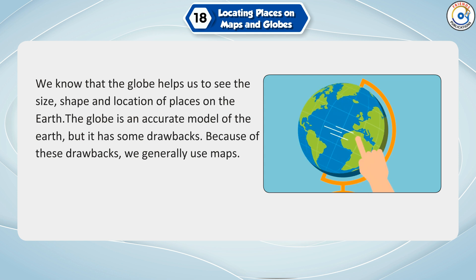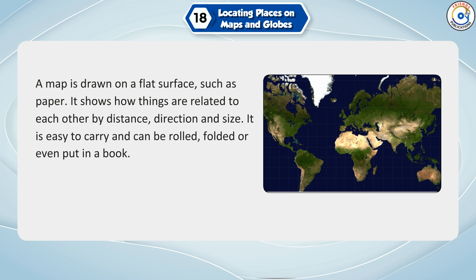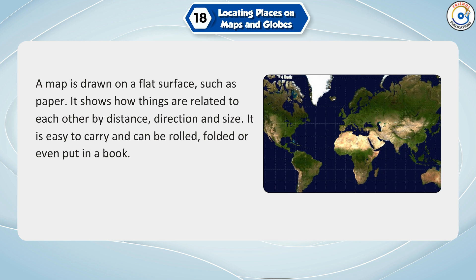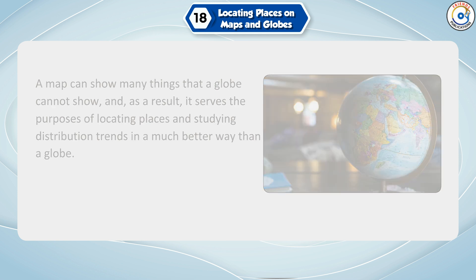Because of these drawbacks, we generally use maps. A map is drawn on a flat surface, such as paper. It shows how things are related to each other by distance, direction and size. It is easy to carry and can be rolled, folded or even put in a book. A map can show many things that a globe cannot show, and it serves the purposes of locating places and studying distribution trends in a much better way than a globe.